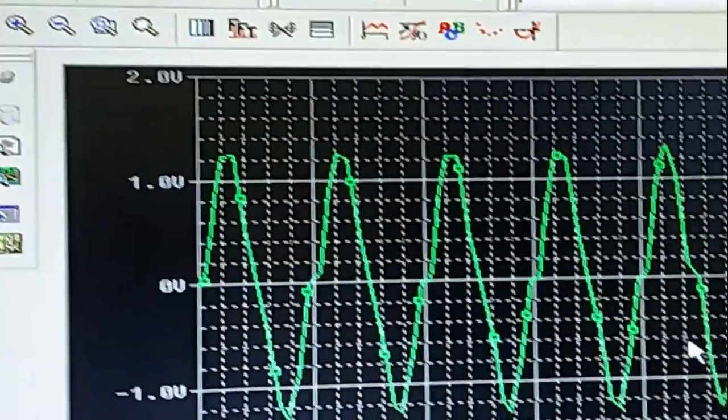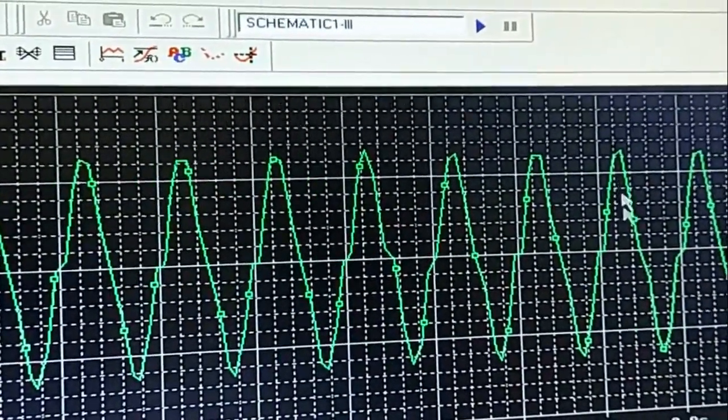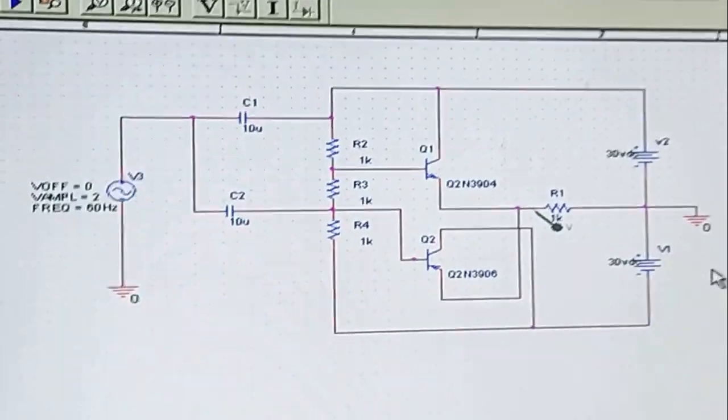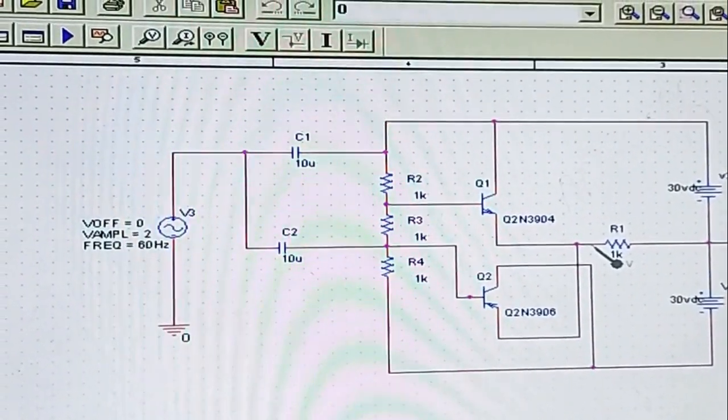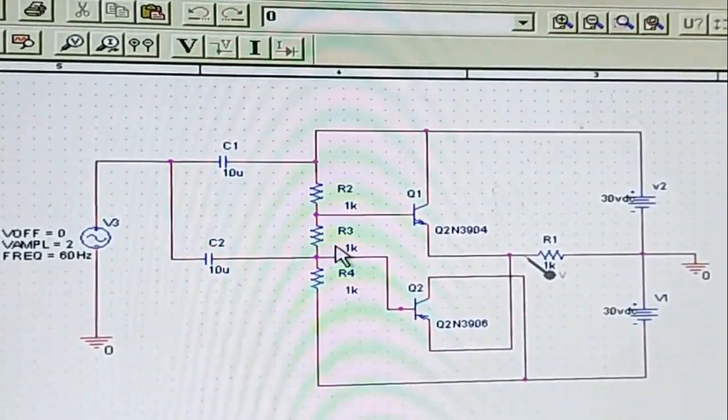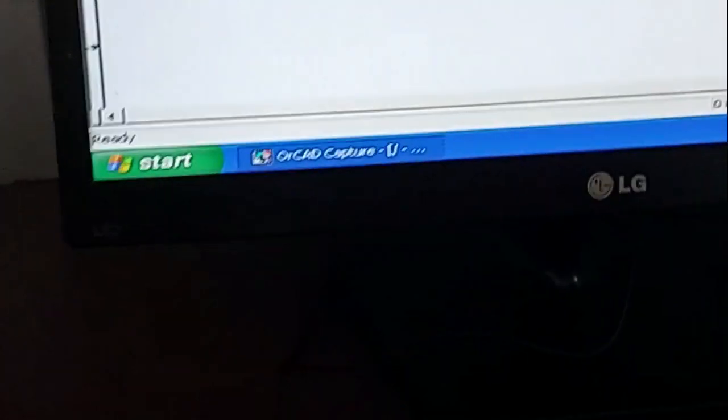You can see there is crossover distortion across the output voltage. So this is the circuit diagram for Class B push-pull amplifier with crossover distortion.